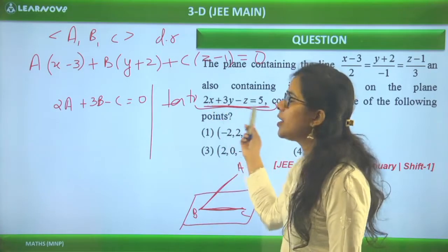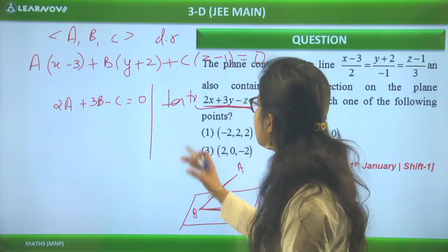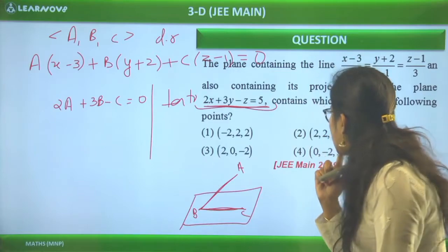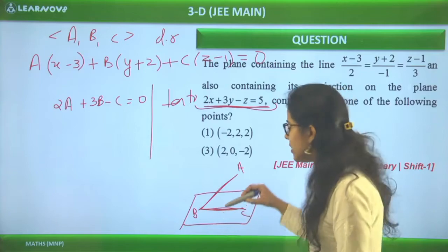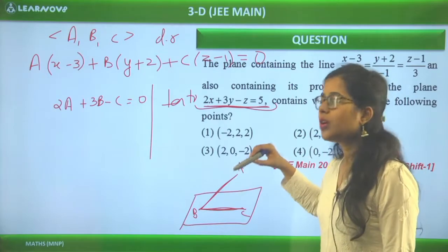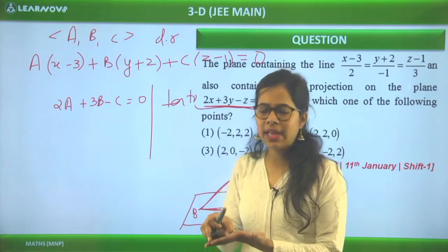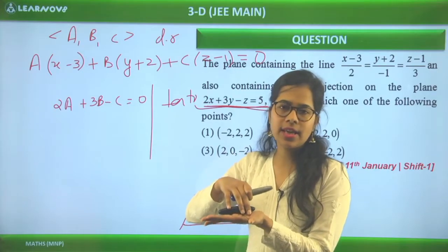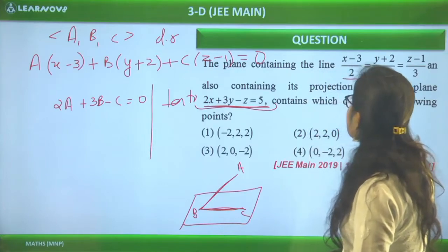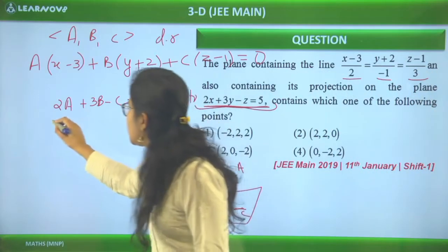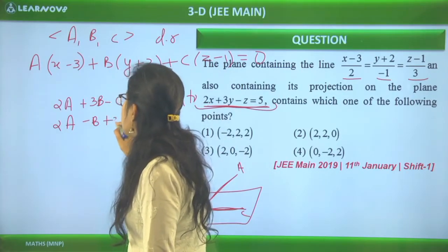The required plane also contains the given line, so the line's direction vector is perpendicular to the plane's normal. The line has direction ratios (2, -1, 3). Dotting with (A, B, C): 2A - B + 3C = 0. This is our second relation. Now we have two equations in A, B, C — sufficient to find the ratios.